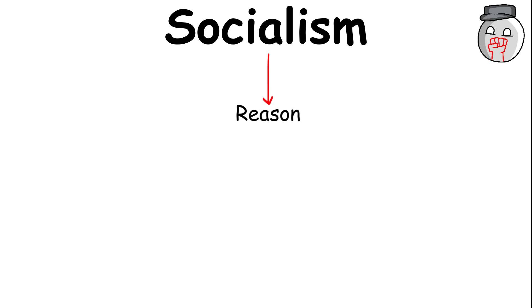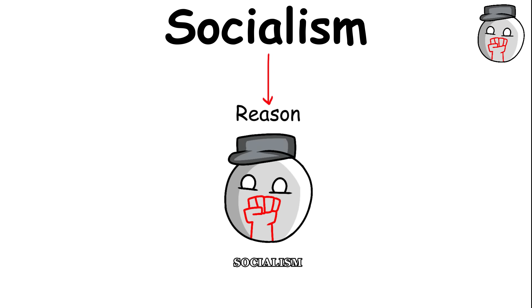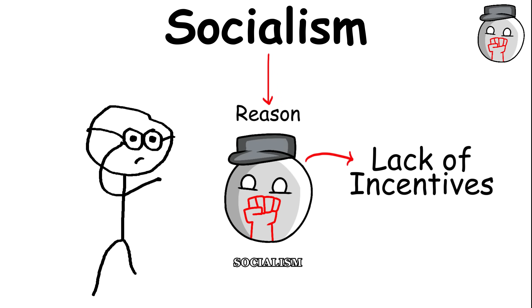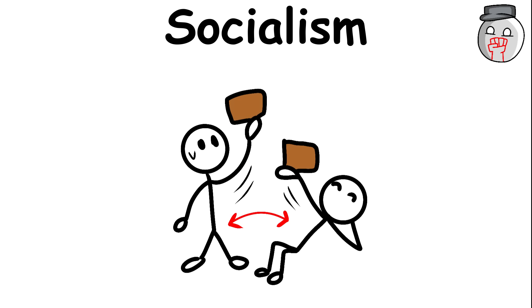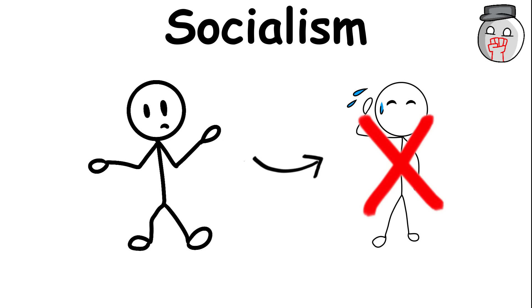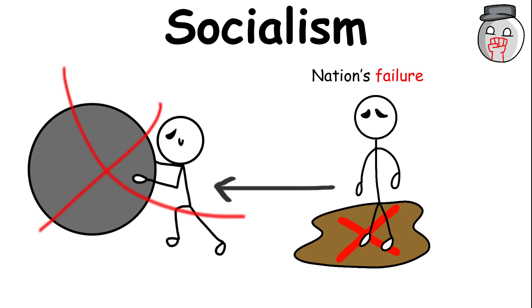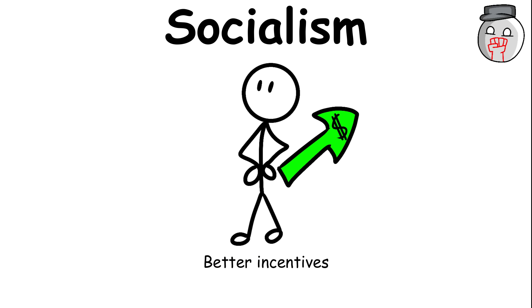The reason why socialism is not as popular as some forms of government is the lack of incentives. If someone gets the same resources as someone who didn't work as hard, there's no point in working harder. This can potentially lead to the nation's failure, especially if no one is willing to work hard to get better incentives.